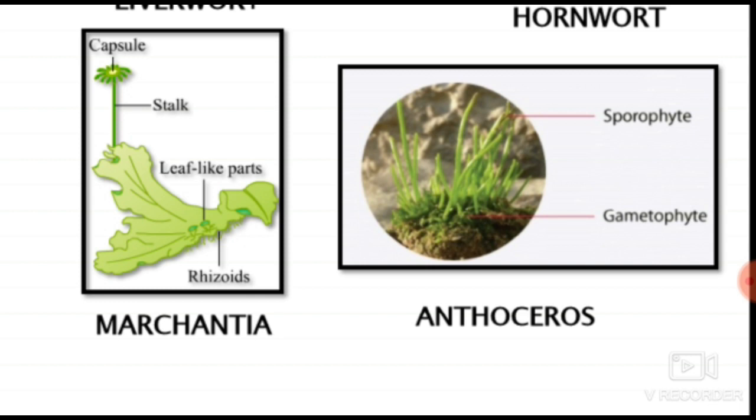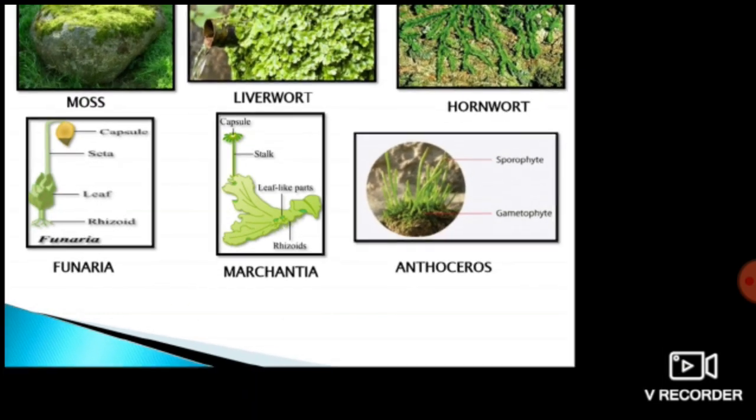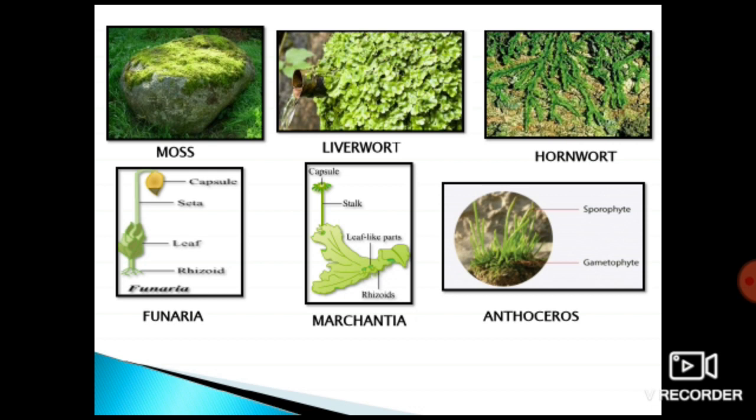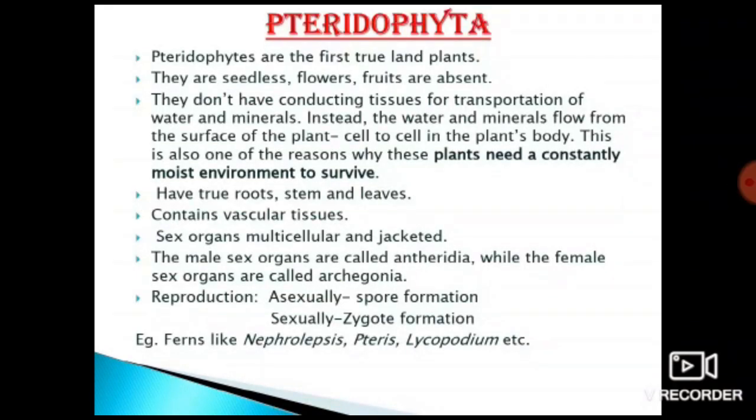Let's revise what we've studied about bryophytes. First, they grow in moist and shady places. Second, they are primitive plants with a thaloid body not differentiated into roots, stems, and leaves. Third, they lack a true root system, having rhizoids instead — hair-like structures providing a base. Fourth, they are known as amphibians of the plant kingdom because they grow on land but need water for sexual reproduction. Fifth, they lack vascular tissue — xylem and phloem are absent.